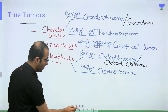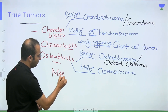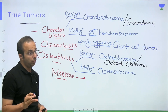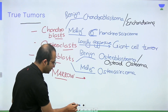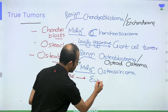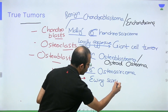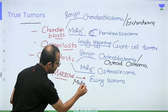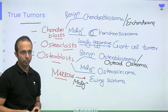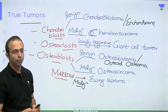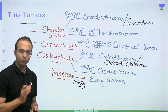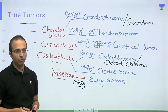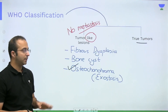I also forgot to mention: bone has marrow, and the marrow is one area where you find maximum growth in the body, so only malignant tumors come from marrow. A very important malignant tumor that comes from the marrow is Ewing's sarcoma. So these are the tumors we are going to discuss. As I told you, first I will discuss the tumor-like lesions, then go ahead and individually take up each of the true tumors.